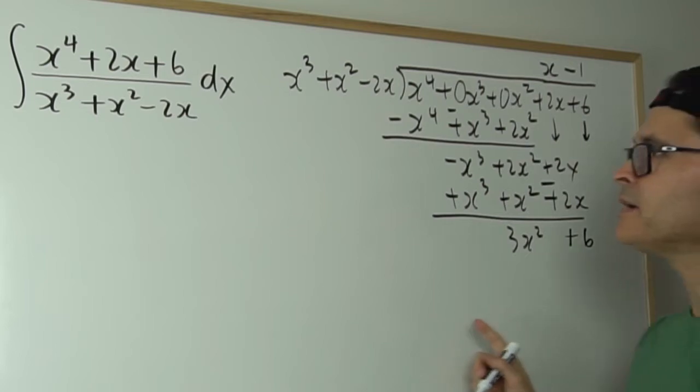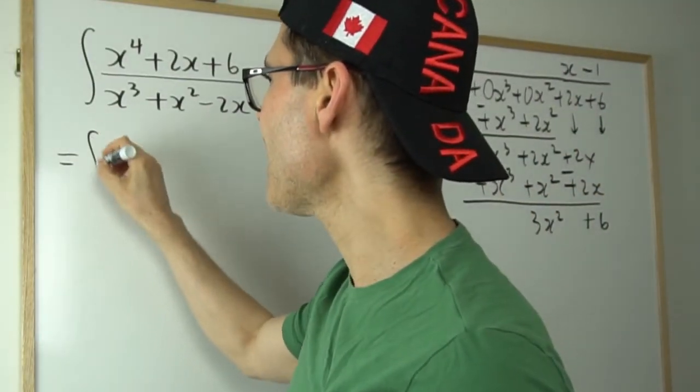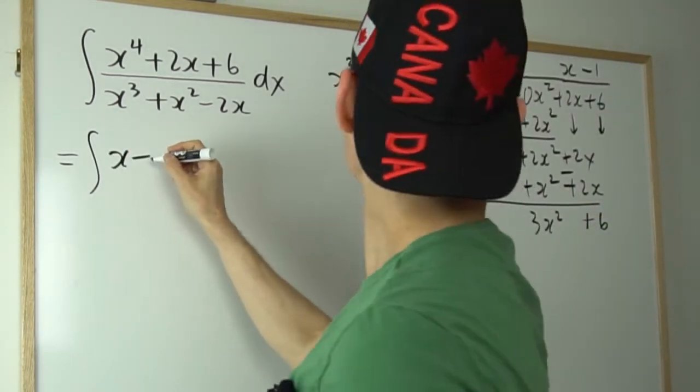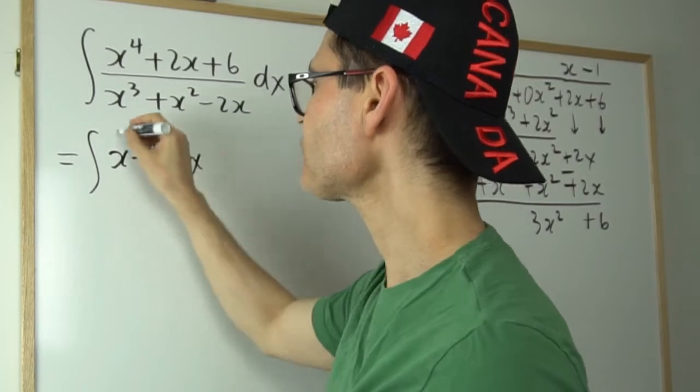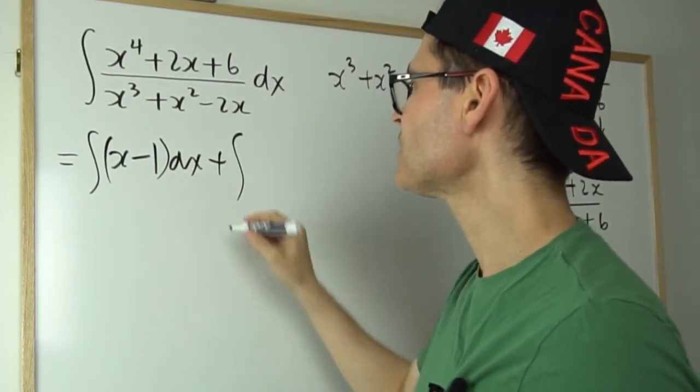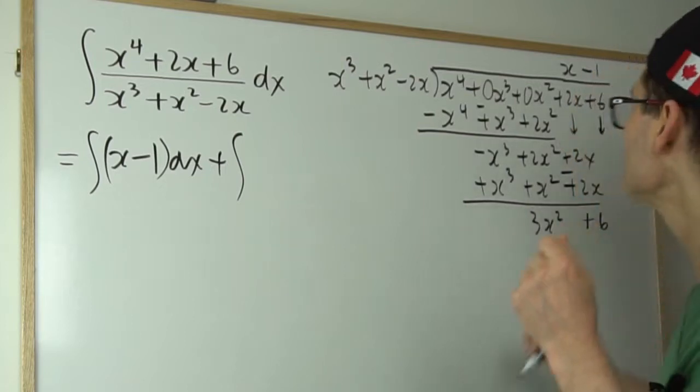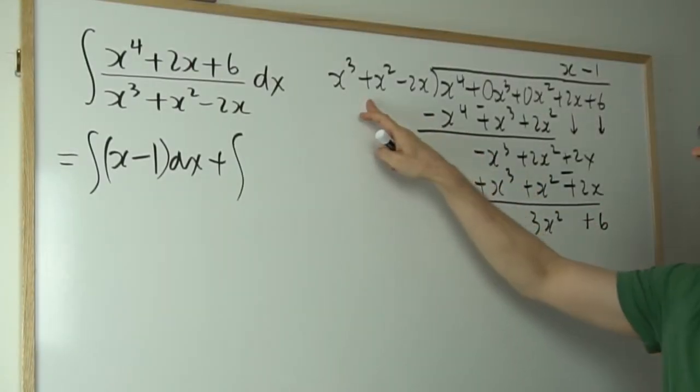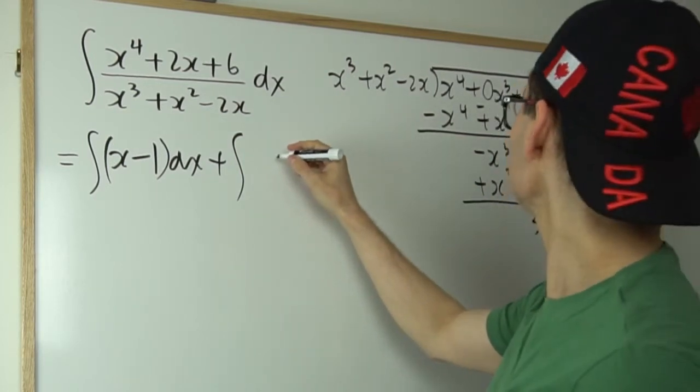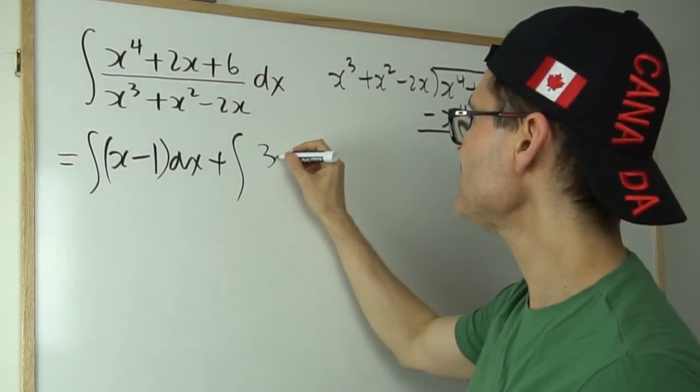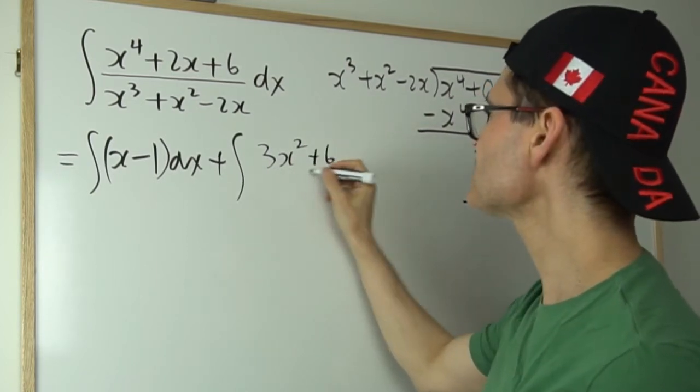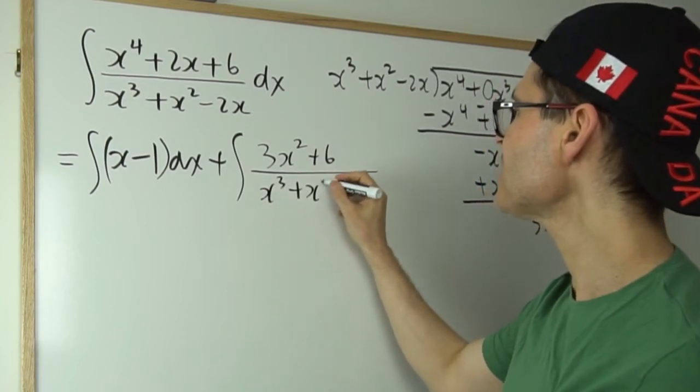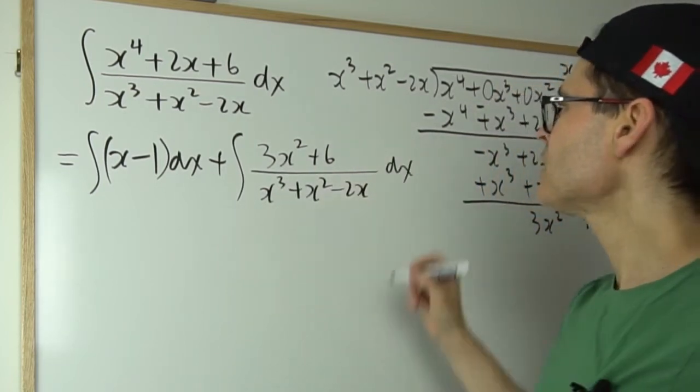So what I could do is rewrite this as the integral of the quotient, which is x minus 1 dx plus, and this is just using the division statement. So I've got the quotient and then the remainder divided by the divisor. So take the remainder, which is 3x squared plus 6 all over the divisor, which is x cubed plus x squared minus 2x dx.